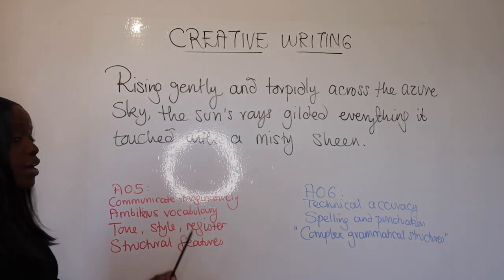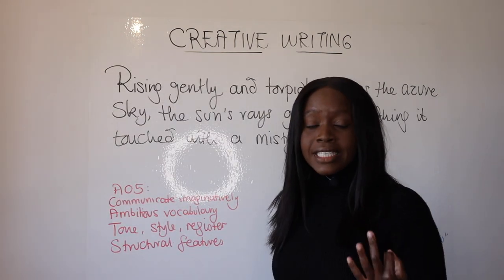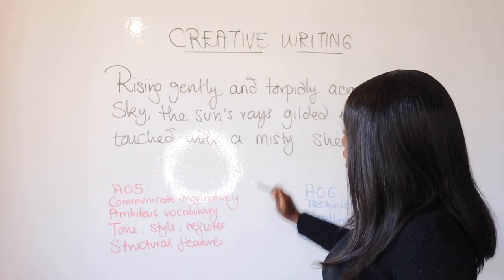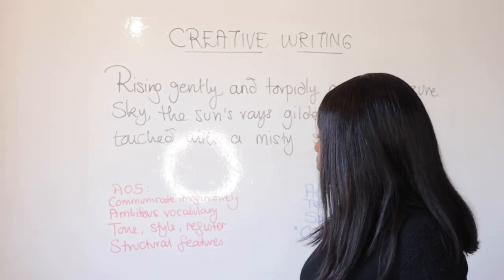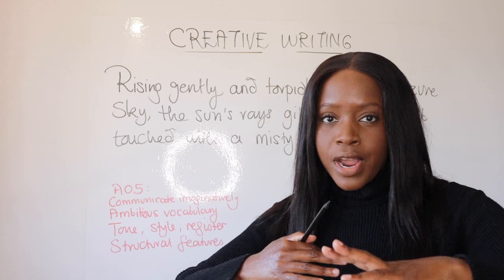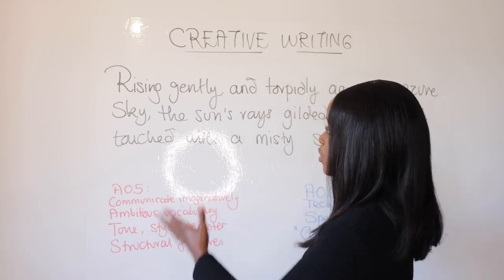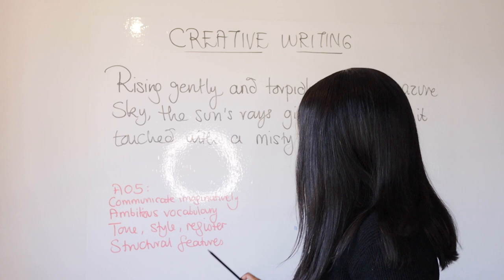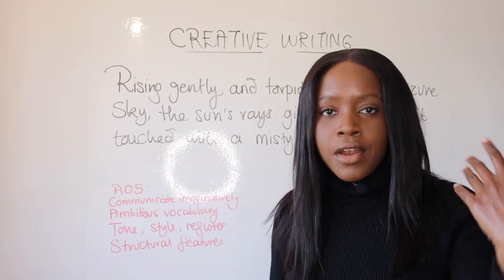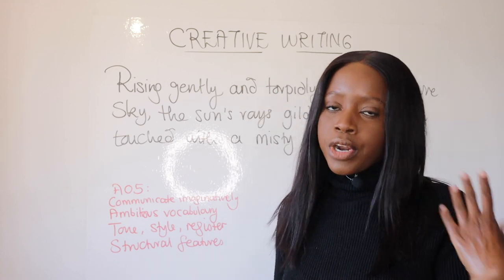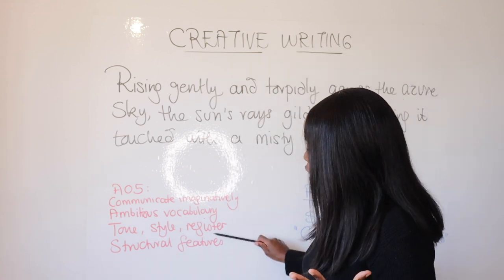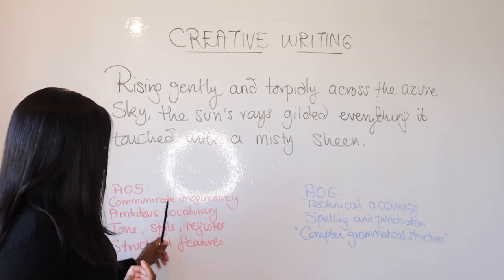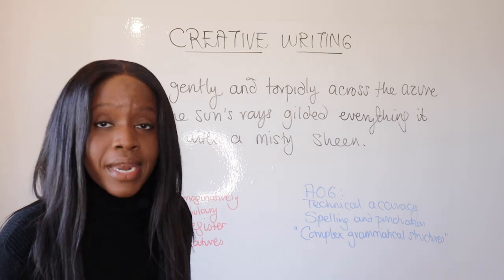What do tone, style, and register mean in creative writing? Tone simply means whether you are setting a nice positive mood or a dark one — this opening sentence starts with a really nice and positive mood. Style means are you able to slow down the pace of your writing, which is what this complex sentence does, or write with a series of short sentences to speed it up? Register means is it formal and well-spelled, or really informal? In creative writing, always use a formal register. And finally, this is a complex sentence, so you are hitting the structural features requirement in AO5.